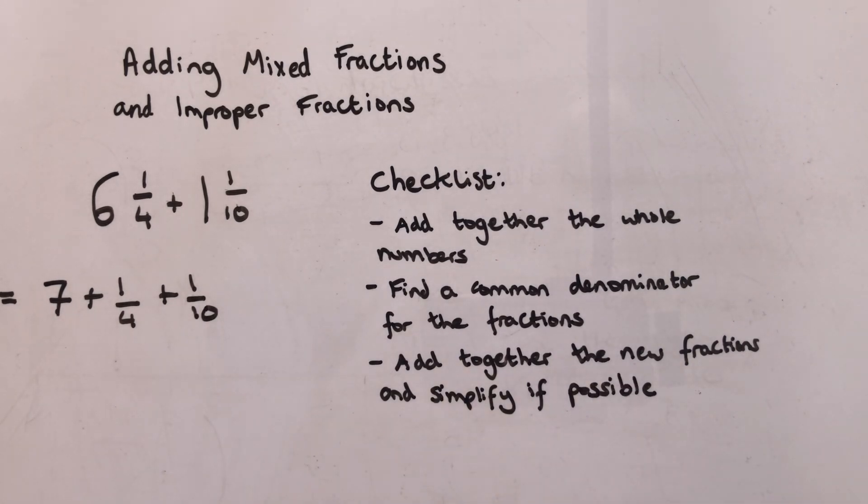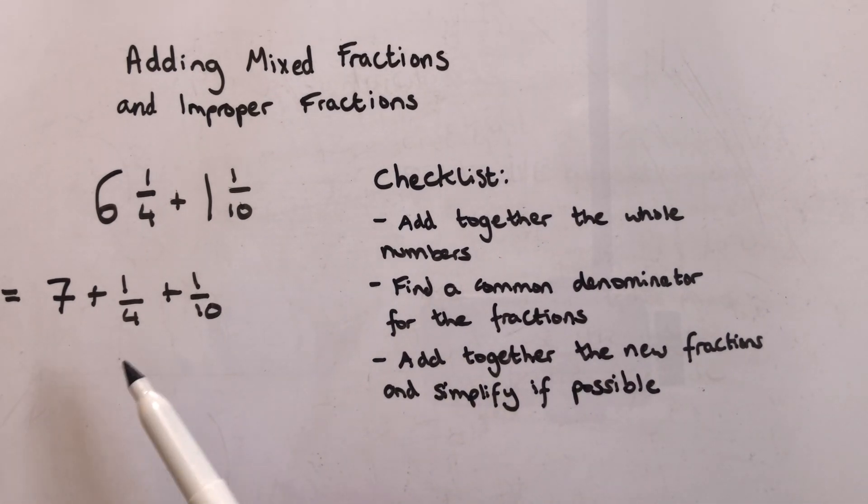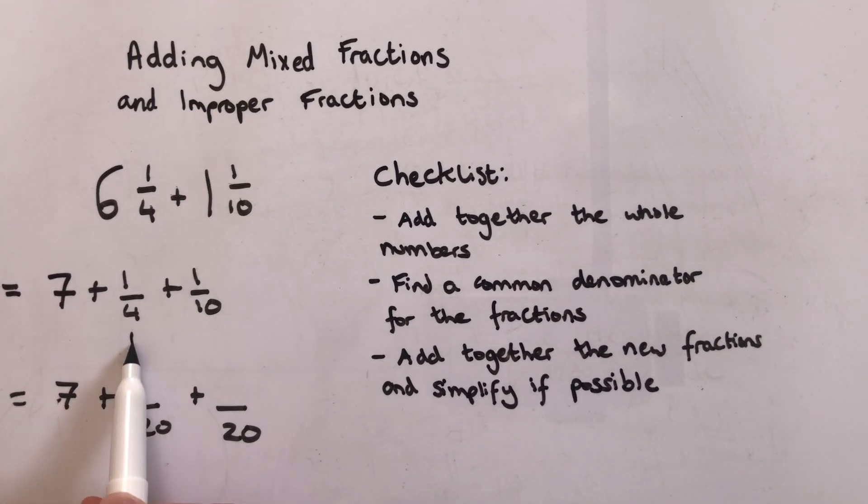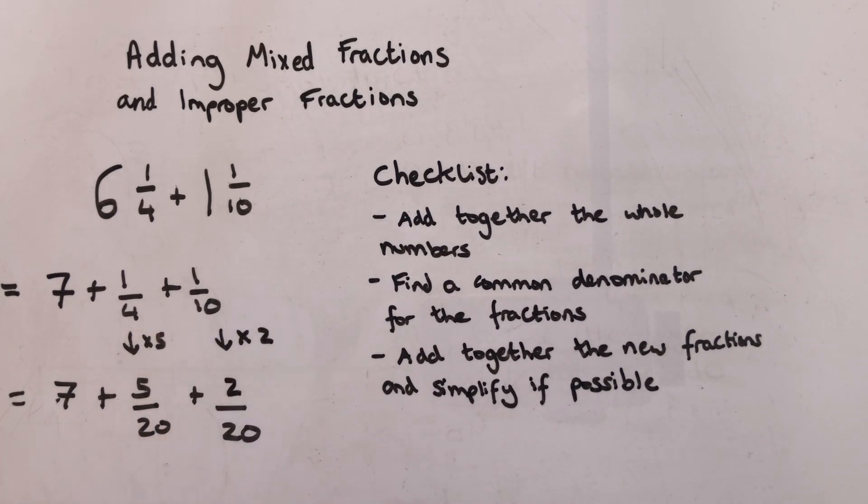Now we go and find a common denominator for those fractions. So I know that the nearest lowest common denominator is going to be twenty for these, so it's going to be seven plus something over twenty and something over twenty. So four times five gets me to twenty, so I'm going to times by five and get five twentieths. Ten times two got me to twenty down here, so one times two is two.